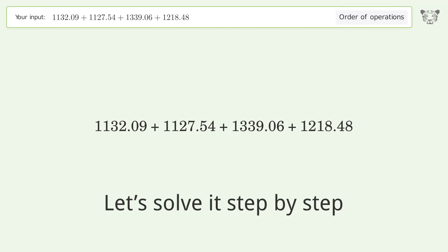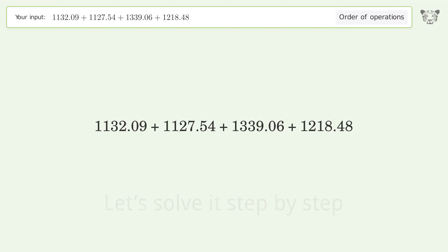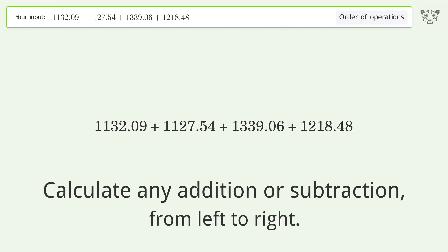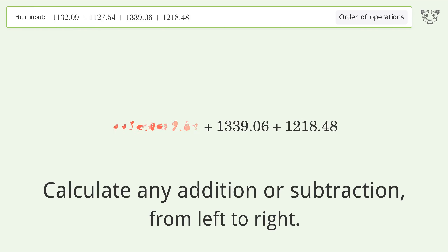Let's solve it step by step. Calculate any addition or subtraction from left to right: 1132.09 plus 1127.54 equals 2259.63. Then 2259.63 plus 1339.06 equals 3598.69.